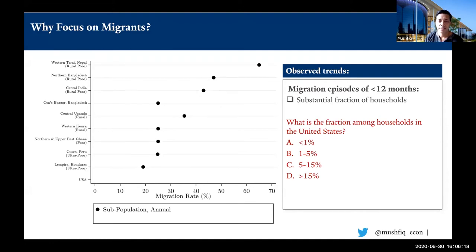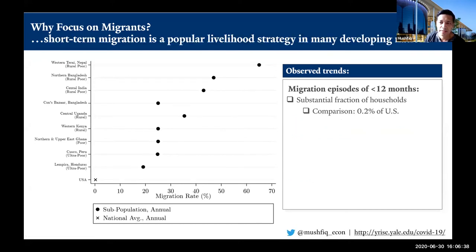We have a very evenly divided view. About a third of respondents suggesting 1% to 5% and about a third suggesting 5% to 15%. It turns out the actual number is 0.2%. So this situation is very different in developing nations compared to industrialized countries. Not only is it high in absolute terms, it's also very high in relative terms.